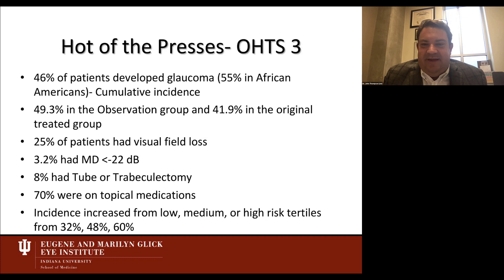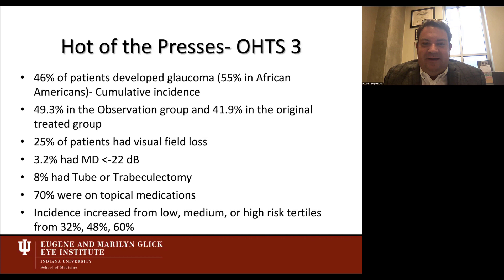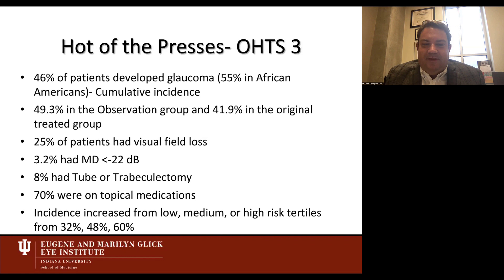OHTS III, the 20-year results, is just now being analyzed and published. Key findings: 46% of patients developed glaucoma at 20 years. African Americans had a higher risk at 55% cumulative incidence. Patients originally treated had a lower risk at 20 years. 25% of patients had visual field loss; 3% had very severe visual field loss with a mean deviation of less than -22 dB. About 8% required tube shunt or trabeculectomy surgery, and 75% were on topical medications.